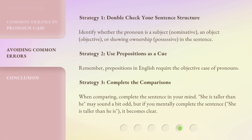Strategy 1: Double-check your sentence structure. Identify whether the pronoun is a subject (nominative), an object (objective), or showing ownership (possessive) in the sentence. Strategy 2: Use prepositions as a cue. Remember, prepositions in English require the objective case of pronouns. Strategy 3: Complete the comparisons. When comparing, complete the sentence in your mind. 'She is taller than he' may sound a bit odd, but if you mentally complete the sentence — 'She is taller than he is' — it becomes clear.